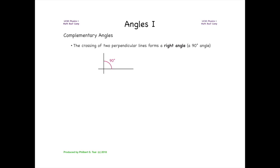There are a number of common geometries that appear in physics problems. We'll start by considering the geometry of complementary angles. The crossing of two perpendicular lines forms a right angle, or a 90-degree angle.